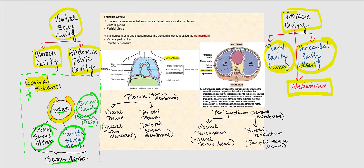Let's look at the thoracic cavity first and then follow that up by looking at the abdominal pelvic cavity. The serous membrane that surrounds the pleural cavity is referred to as the pleura, which is obviously associated with the lung. We're identifying the organ and giving names to these serous membranes. The serous membrane associated with the lung that encloses it and surrounds the pleural cavity is the pleura. We have the visceral serous membrane and the parietal serous membrane, so therefore we have the visceral pleura and the parietal pleura.